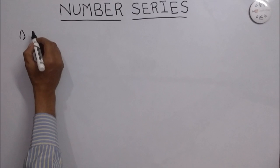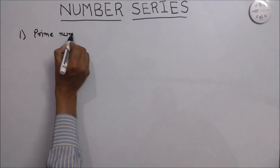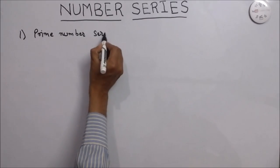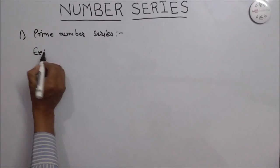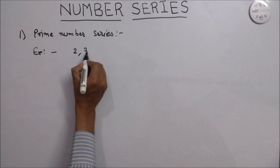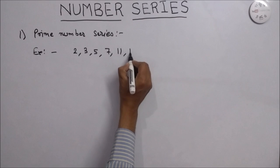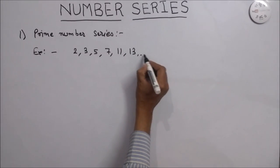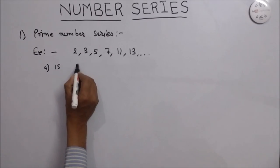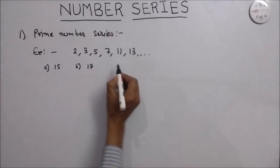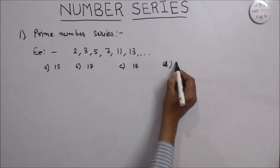First is the prime number series. We take an example. Example: 2, 3, 5, 7, 11, 13, and we have to find the next number. Options are given: A is 15, B is 17, C is 18, and D is 19.